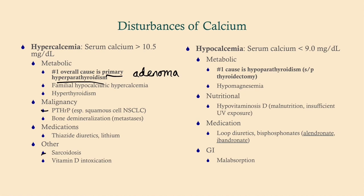Sarcoidosis causes hypercalcemia because granulomas produce 1-alpha-hydroxylase, activating vitamin D independently and creating a state of hypervitaminosis D. Vitamin D intoxication is another cause — remember it is a fat-soluble vitamin, so overdose is possible.